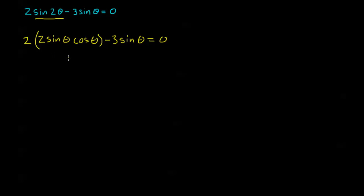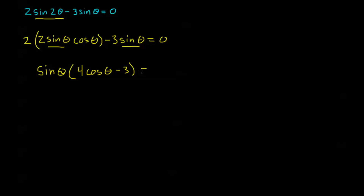I'll do some factoring and simplifying. 2 times 2 is 4, and I don't have any powers of 2 here, so I don't need to factor like a quadratic. I can factor out the common factor of all terms, which is sine theta. After factoring out sine theta, the first term becomes 4 cosine theta, and I get sine theta times 4 cosine theta minus 3, all equal to 0.